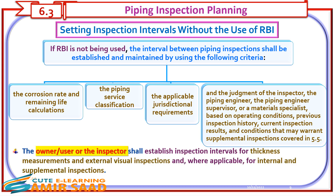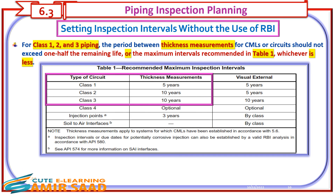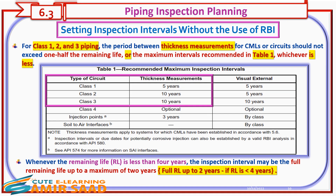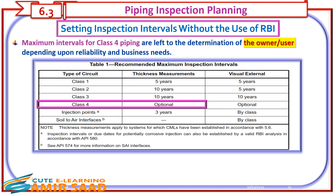The owner, user, or inspector shall establish inspection intervals for thickness measurements and external visual inspections, and where applicable, for internal and supplemental inspections. For Class 1, 2, and 3 piping, the period between thickness measurements for CMLs or circuits should not exceed one-half the remaining life, or the maximum intervals recommended in Table 1, whichever is less. Whenever the remaining life (RL) is less than 4 years, the inspection interval may be the full remaining life, up to a maximum of two years. Maximum intervals for Class 4 piping are left to the determination of the owner/user depending upon reliability and business needs. Note that maximum intervals for visual external inspection per Table 1 do not depend on remaining life — they are extracted directly from the table and depend on piping class only. The interval is established by the inspector or piping engineer in accordance with the owner/user's quality assurance system.